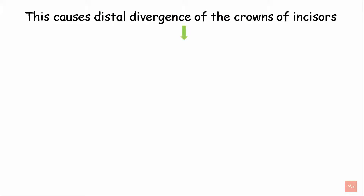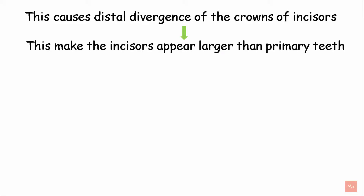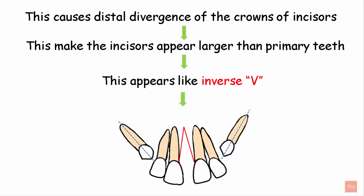Permanent incisors thus appear to be much larger as compared to the primary teeth, with the longitudinal axis flared out like an inverse V-shape. So this is the inverse V-shape, and canines cause distal divergence of the crown of the incisors as they erupt further.